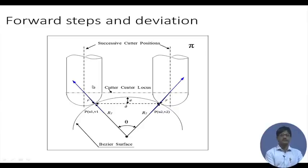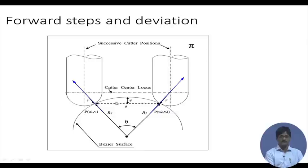This is one position of the cutter and this is another position. It has moved from here to here, and ignoring external gouging, this path shows the machined surface and this is the deviation. These are the two radii of curvature at the two points, and we have to calculate the second point at which the cutter arrives.